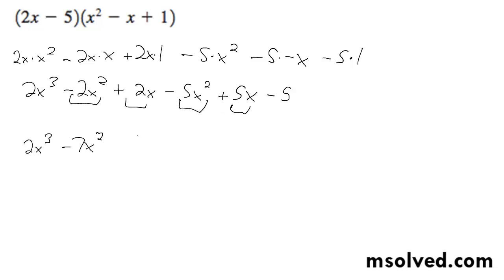the x terms are 2x plus 5x, so plus 7x, and then minus 5. And that's our final answer.